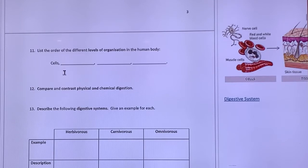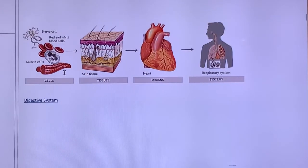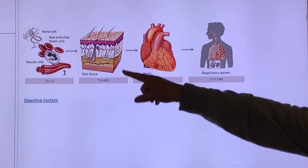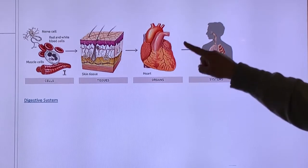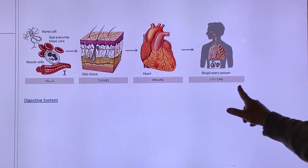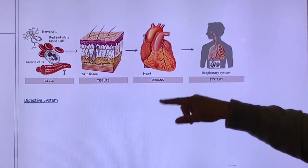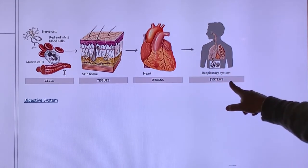List the order of levels of organization in the human body. So your body is organized. You've got your cells, make up your tissue, makes up your organs, makes up your body systems. So cells, tissues, organs, systems. And then there's the next few questions are a little bit broader.